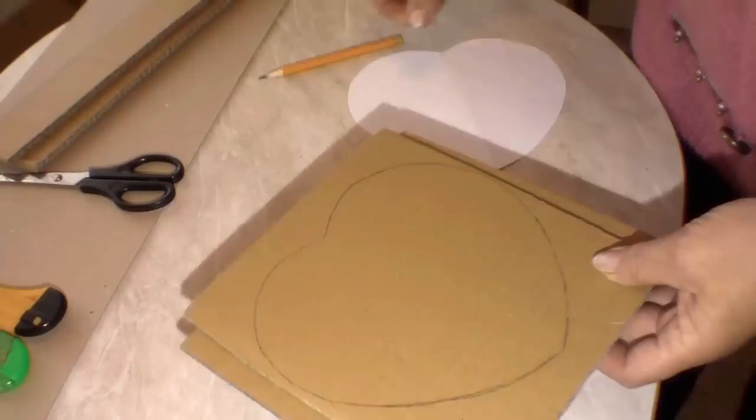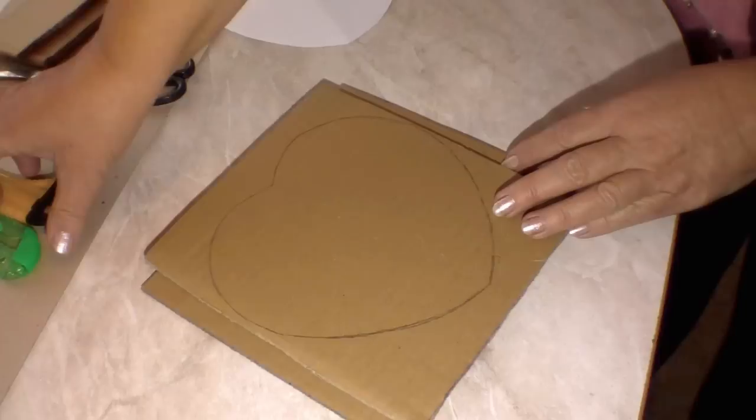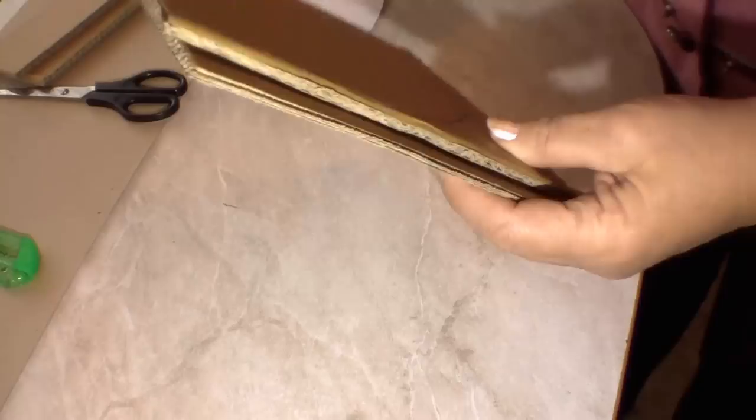So, we have stuck two parts of cardboard to each other. Place the shape on and outline it with a pencil. Now, take an office knife and let's cut both pieces together.